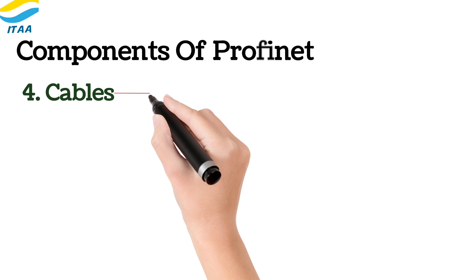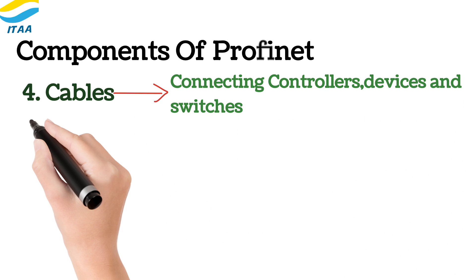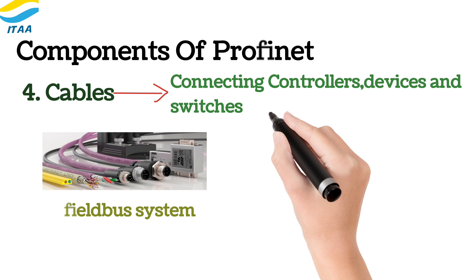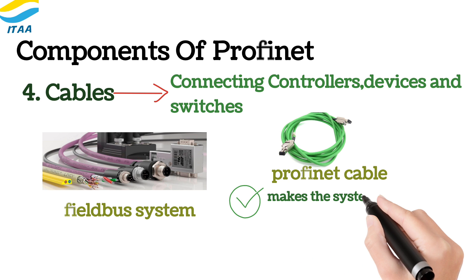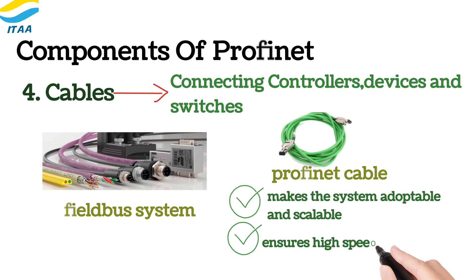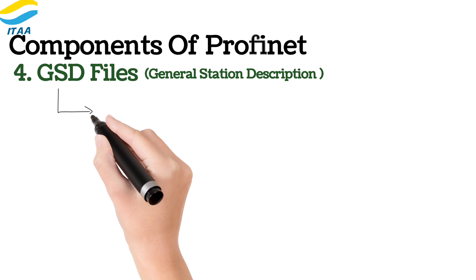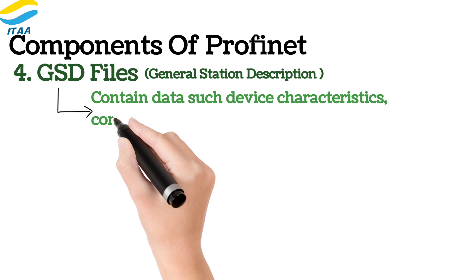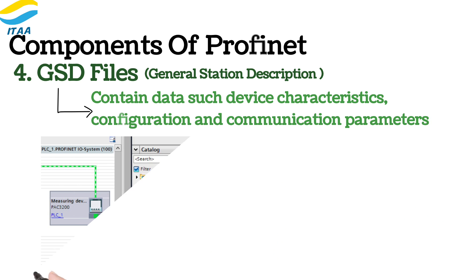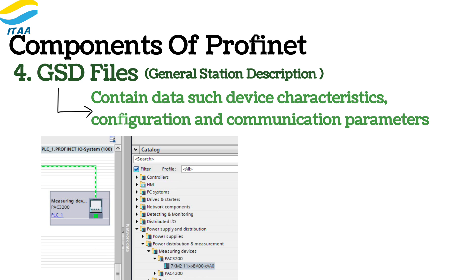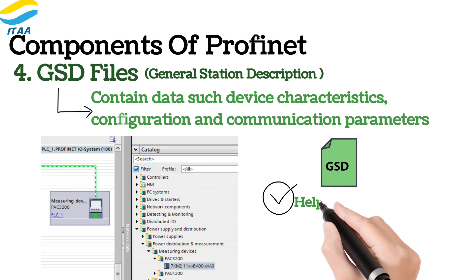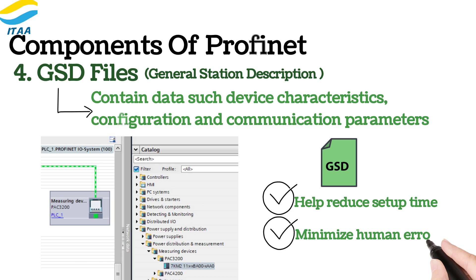Ethernet cables form the physical backbone of a PROFINET network, connecting controllers, devices, and switches. Unlike traditional fieldbus systems, PROFINET uses standard Ethernet cables, which makes the system highly adaptable and scalable. These cables ensure high-speed data transfer and are robust enough to endure the demanding environments of industrial settings such as extreme temperatures, vibrations, and electromagnetic interference. GSD files are like a blueprint for each device in a PROFINET network. They contain essential data such as device characteristics, configurations, and communication parameters. When integrating new devices into a network, these files make the process much simpler by providing pre-configured settings that allow the controller to recognize and communicate with the device immediately, helping reduce setup time and minimize human error during configuration.